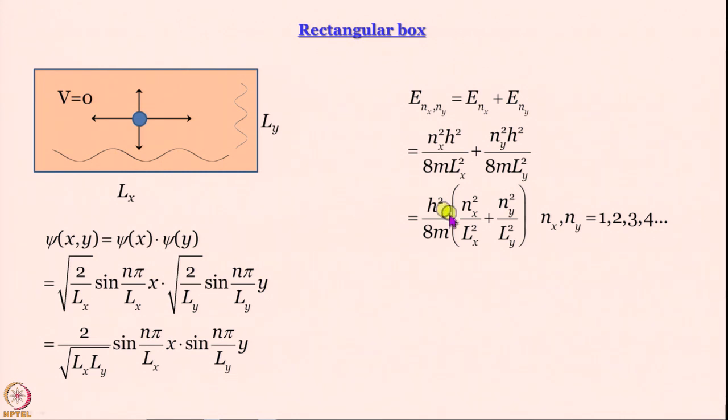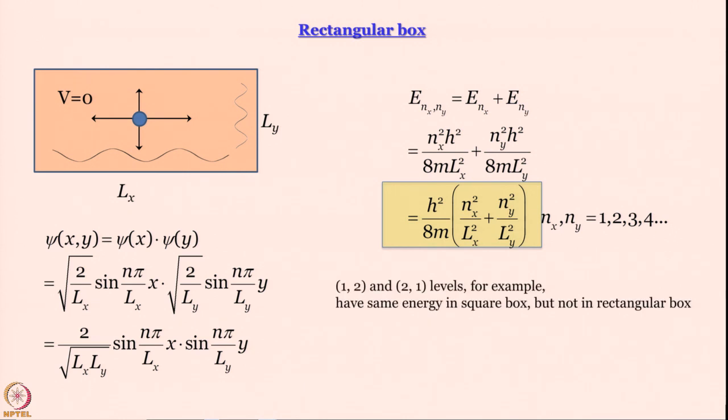What happens if we have a rectangular box instead of a square box? Everything else is same. The only difference is now Lx is not equal to Ly. So energy expression is h square by 8m multiplied by nx square by Lx square plus ny square by Ly square where nx and ny again are 1, 2, 3, 4, so on and so forth.